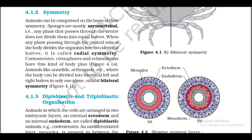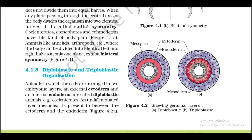4.1.2 Symmetry. Animals can be categorized on the basis of their symmetry. Sponges are mostly asymmetrical — that is, any plane passing through the center does not divide them into equal halves. When any plane passing through the central axis of the body divides the organism into two identical halves, it is called radial symmetry. Coelenterates, ctenophores, and echinoderms have this kind of body plan (Figure 4.1a). Animals like annelids, arthropods, etc., whose body can be divided into identical left and right halves in only one plane, exhibit bilateral symmetry (Figure 4.1b).